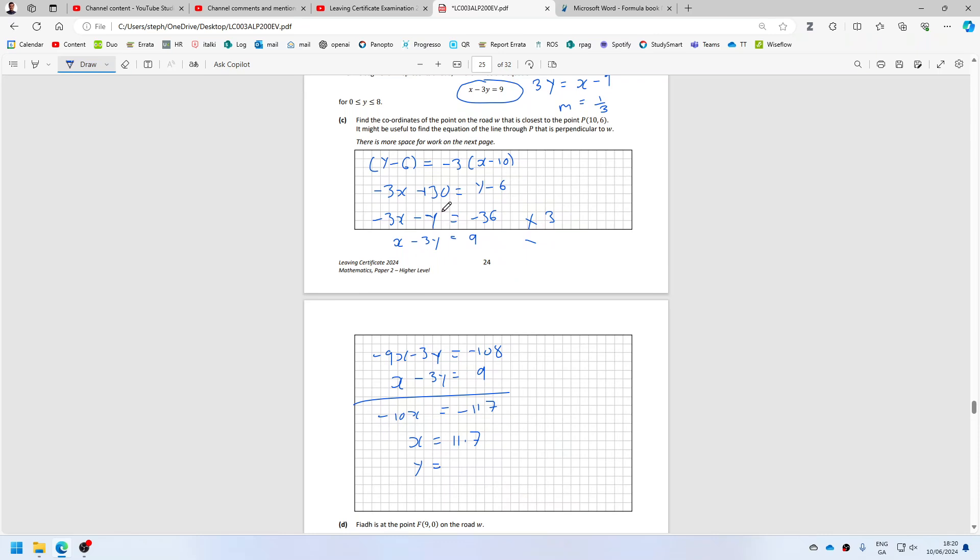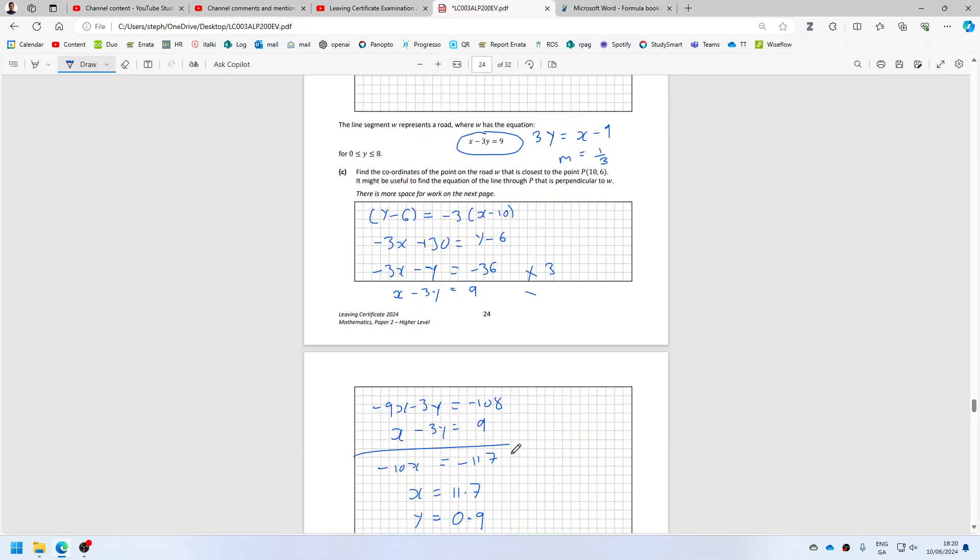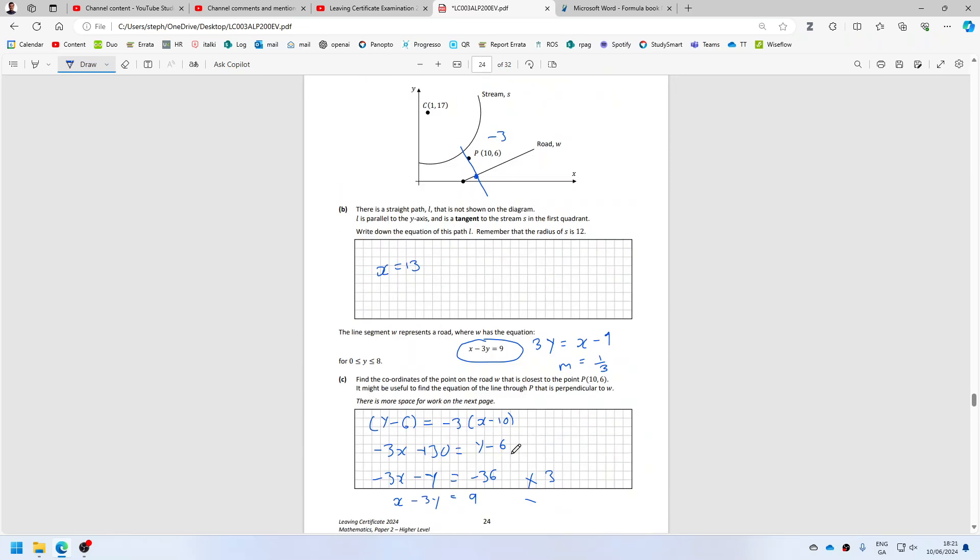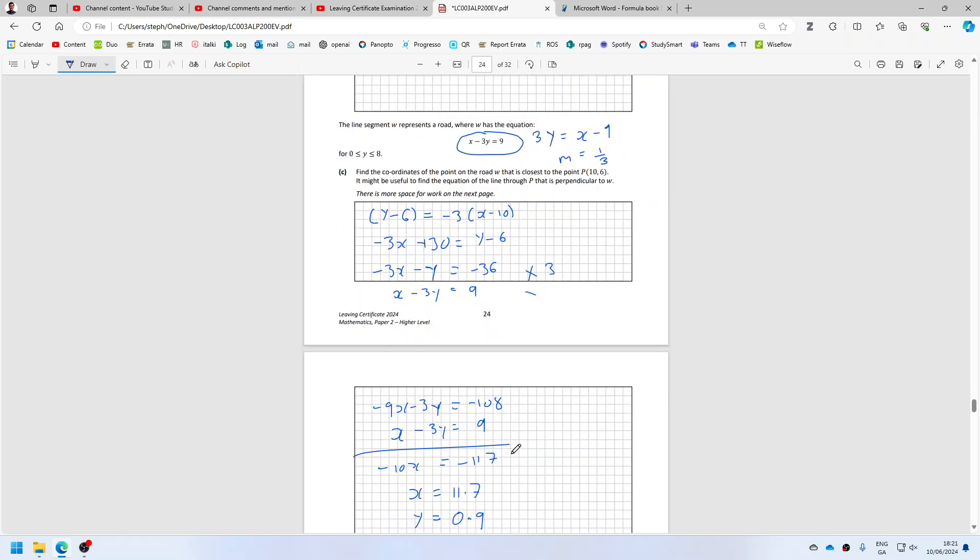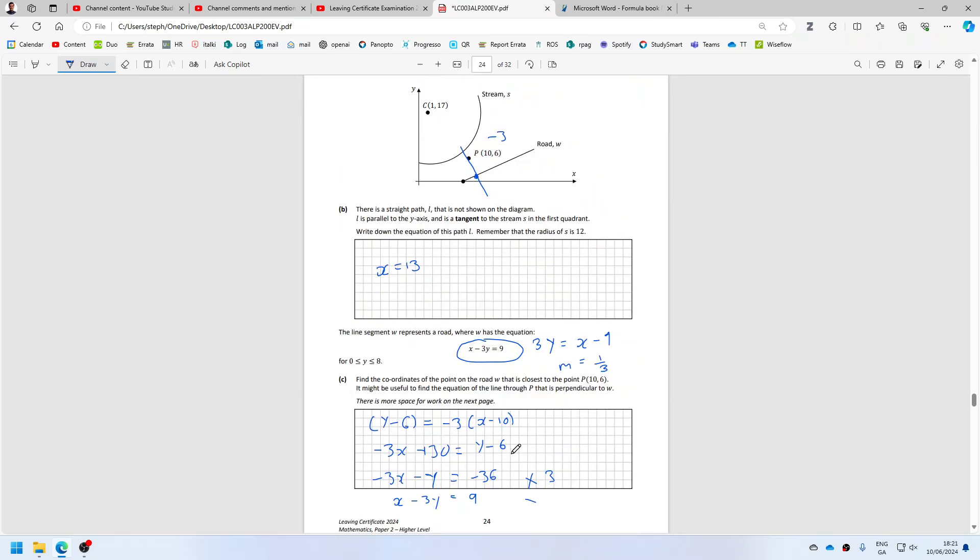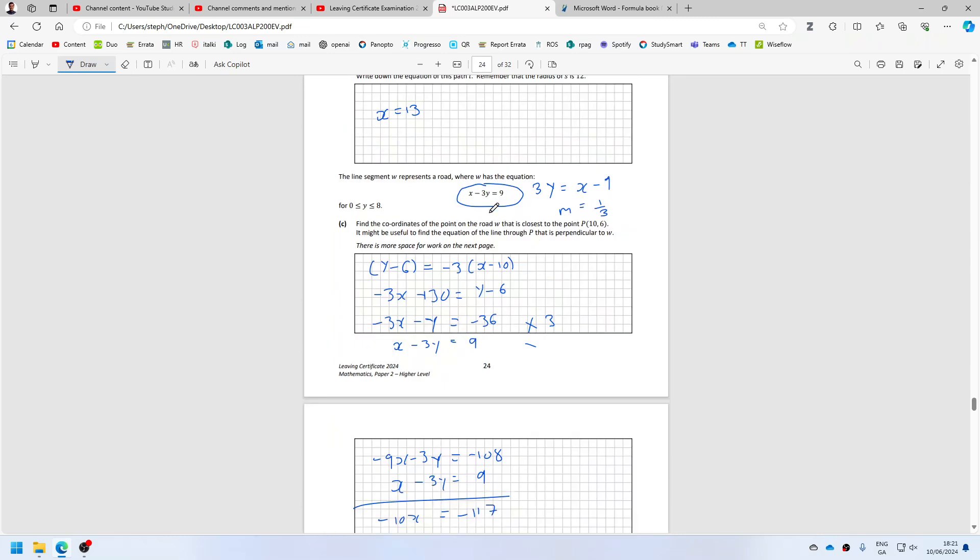And then y would be minus 3x plus 36. 0.6. 0.9. And 11.7. So that's minus 4.9 and 11.7. So 11.7 seems believable, and the y being 0.9 seems believable.